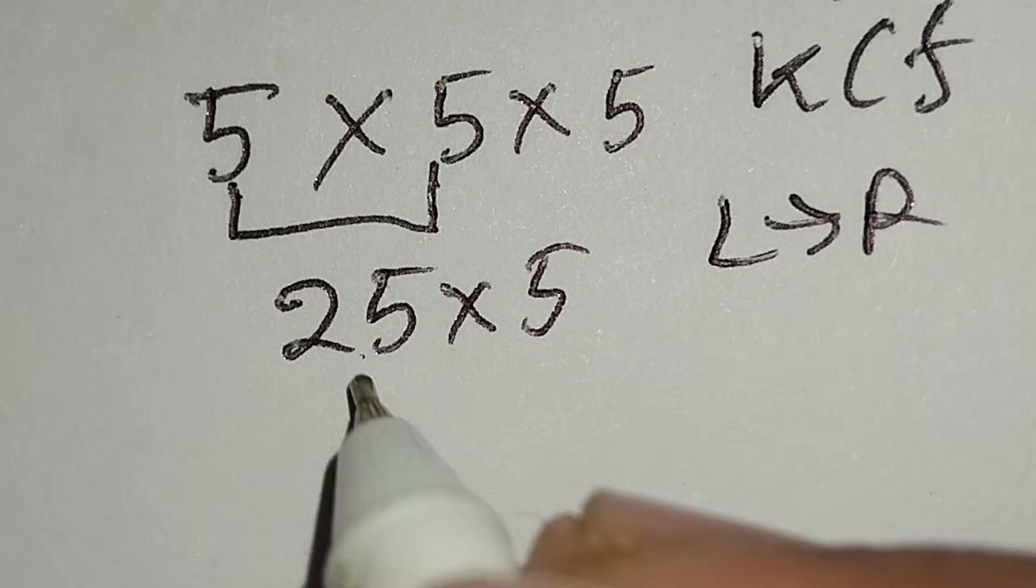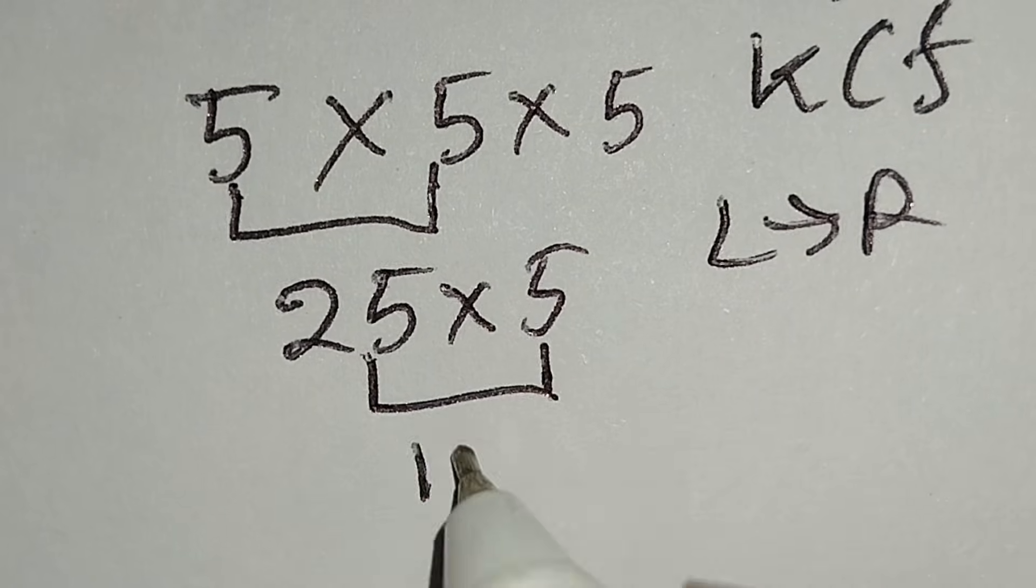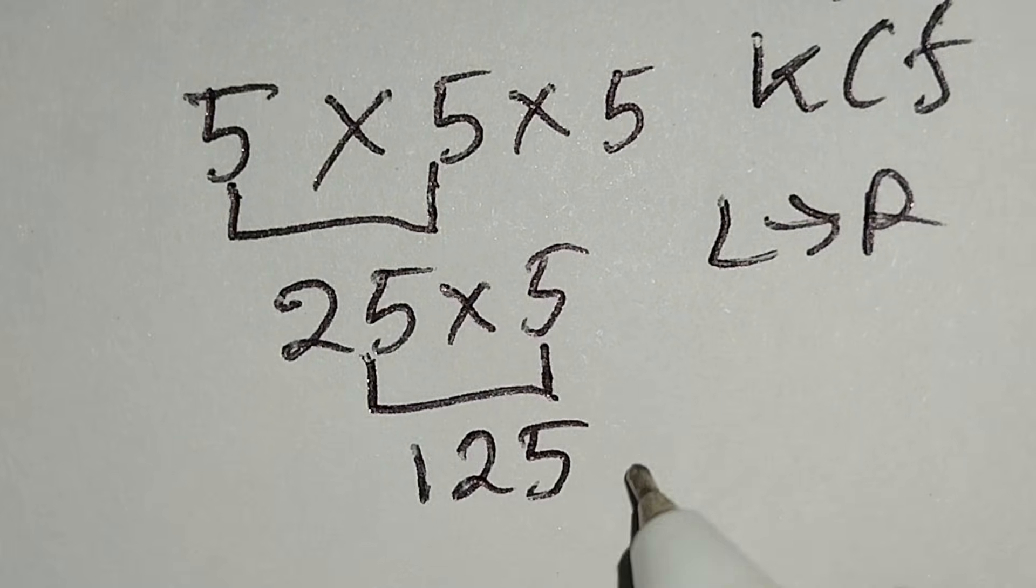25 times 5 gives us 125. And this is the correct answer.